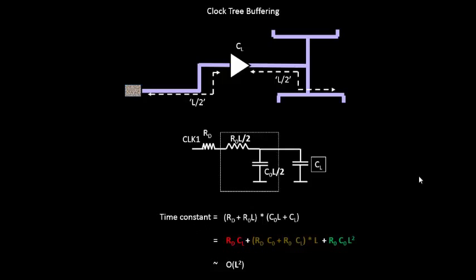Now let us put these L by 2 values in the time constant equation and see what we get. We will replace all L's by L by 2. Now the time constant is not a function of L square anymore, but it's a function of L square by 4.